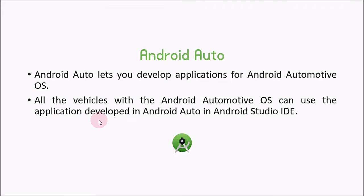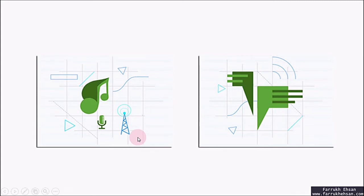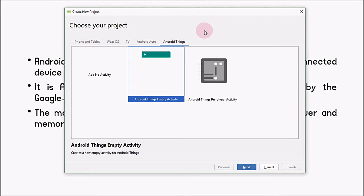Android Auto lets you develop applications for the Android Automotive operating system. All vehicles with the Android Automotive operating system can use applications developed with Android Auto in Android Studio. If you are going to develop an application for a device with the Android Automotive operating system, you should choose one of these options and start developing — it can be an application for GPS, tracking, sound systems, or whatever Android Automotive supports.